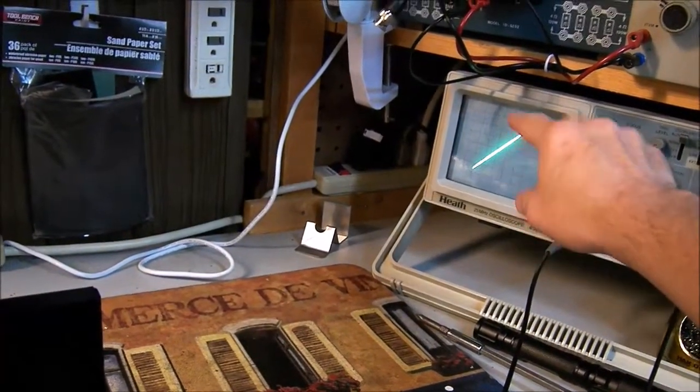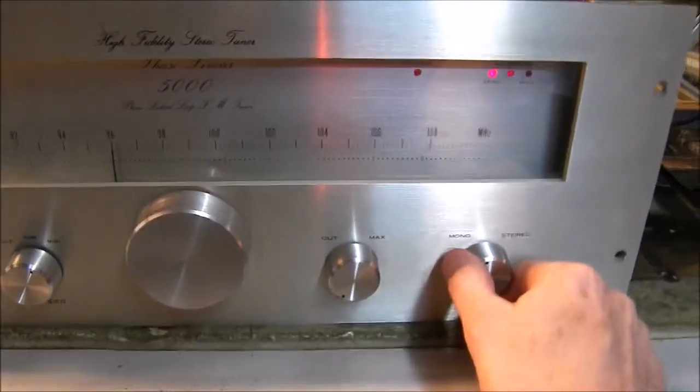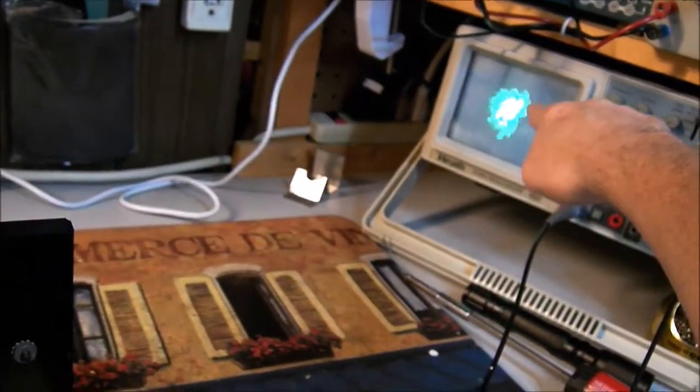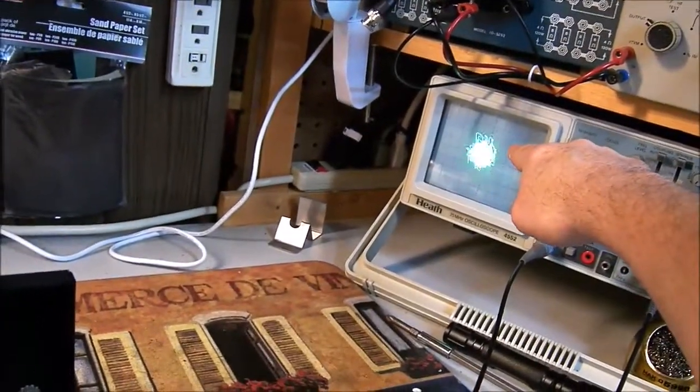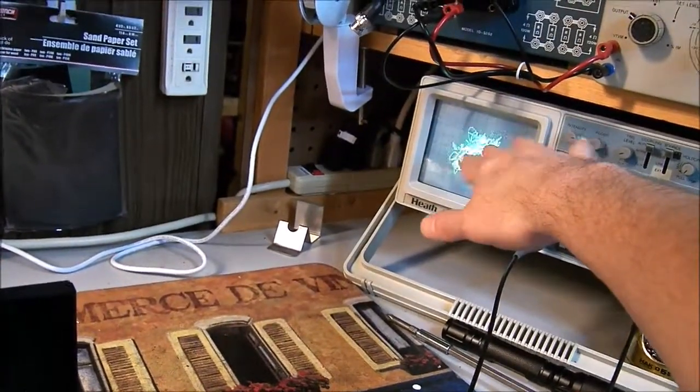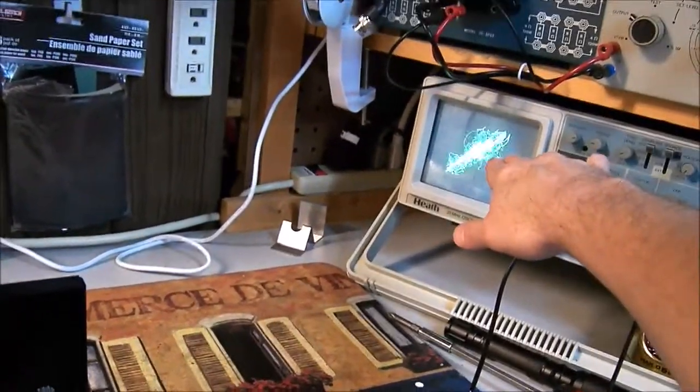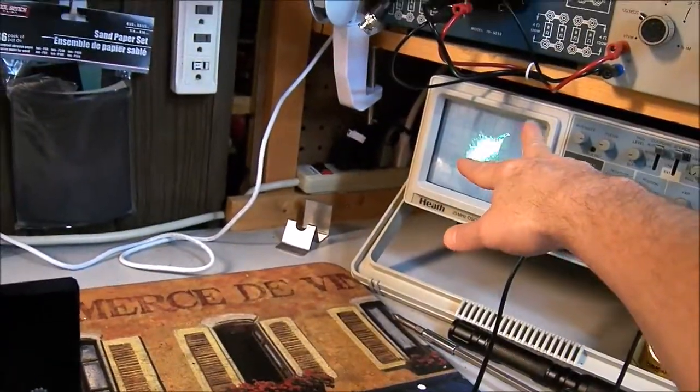In stereo, you're getting all this information, and what this means is that both channels are no longer identical. It's going to depend on the music and whatever's going on, so this is always changing. If you don't have the straight line, you know you're getting stereo, so it's very easy to check.